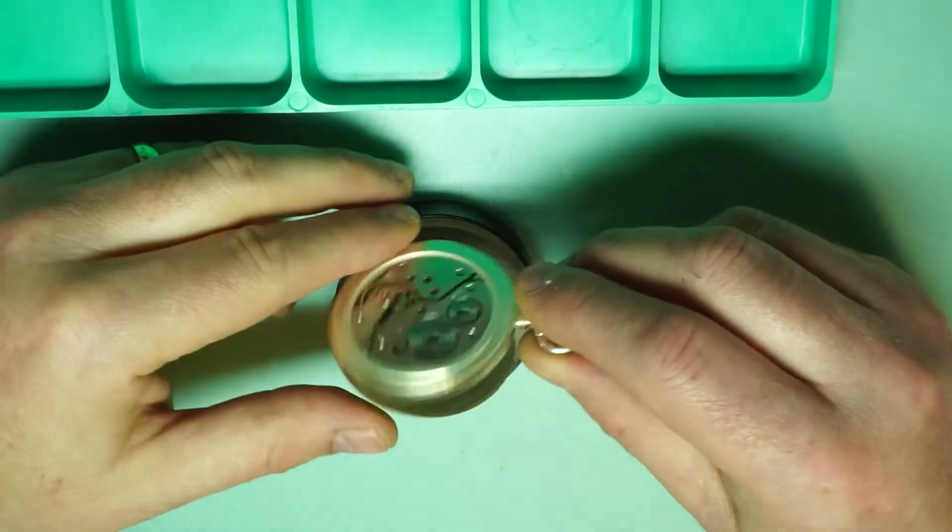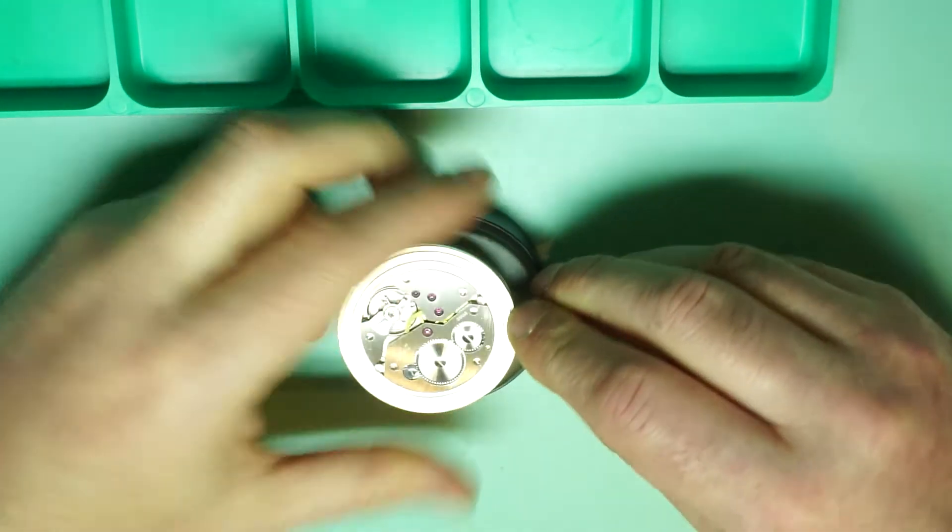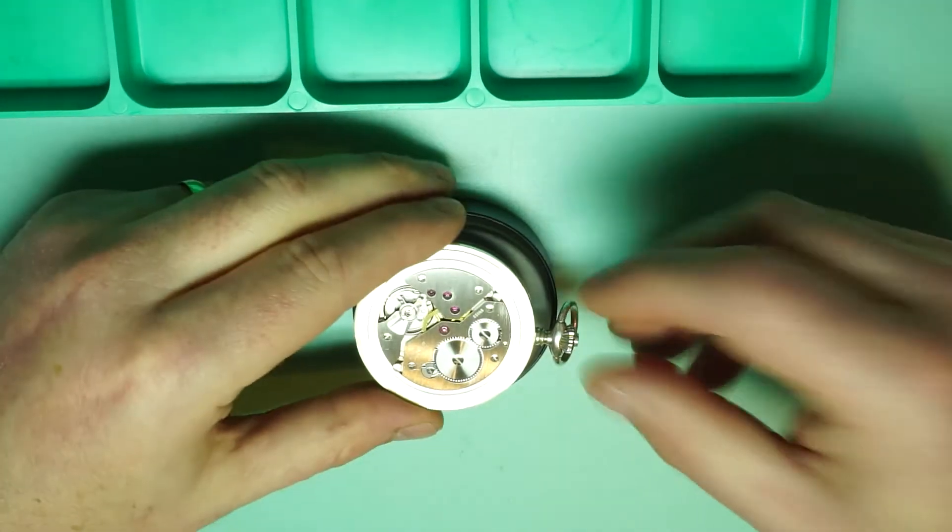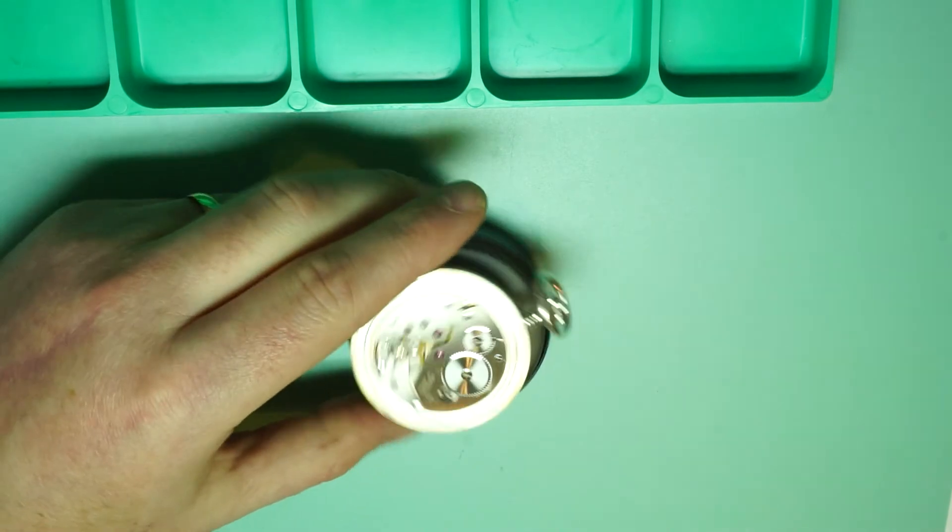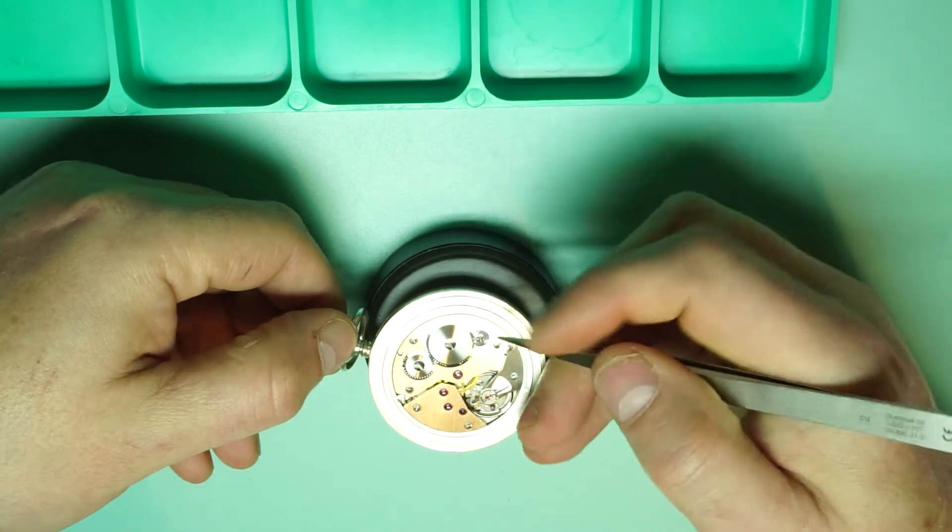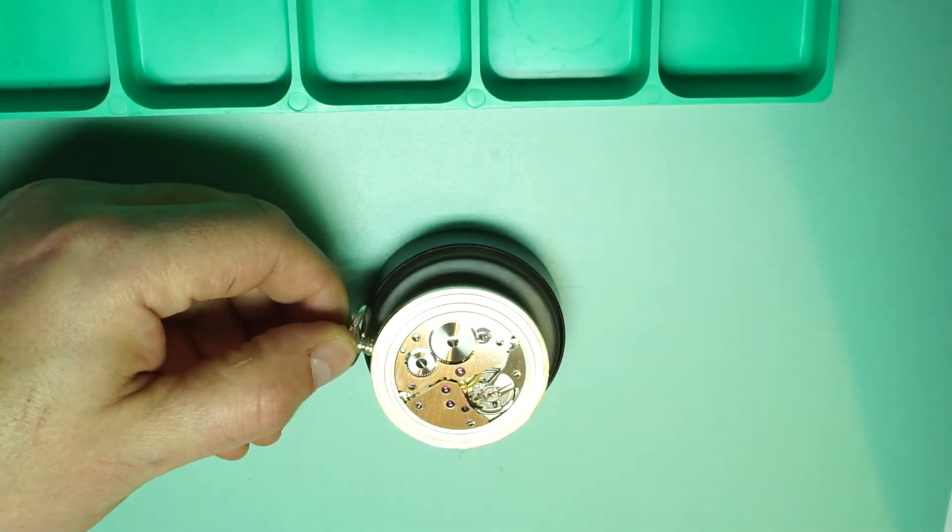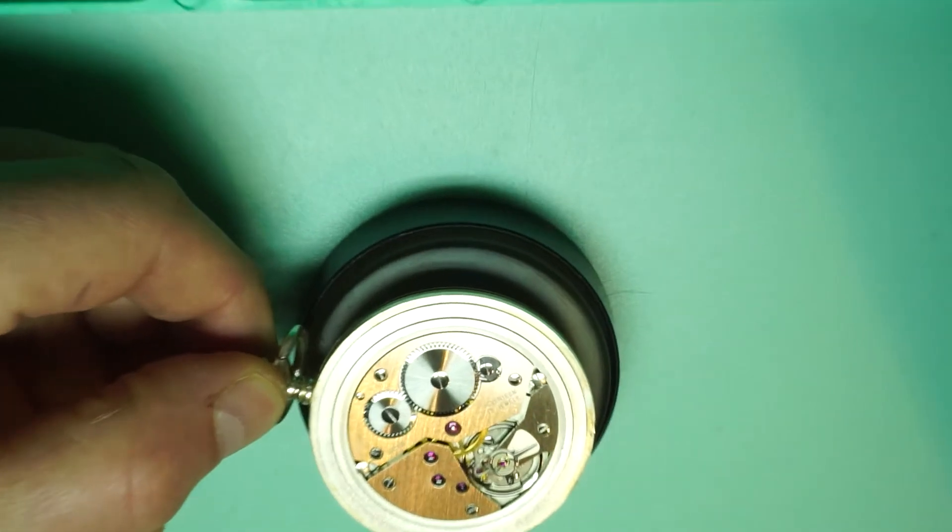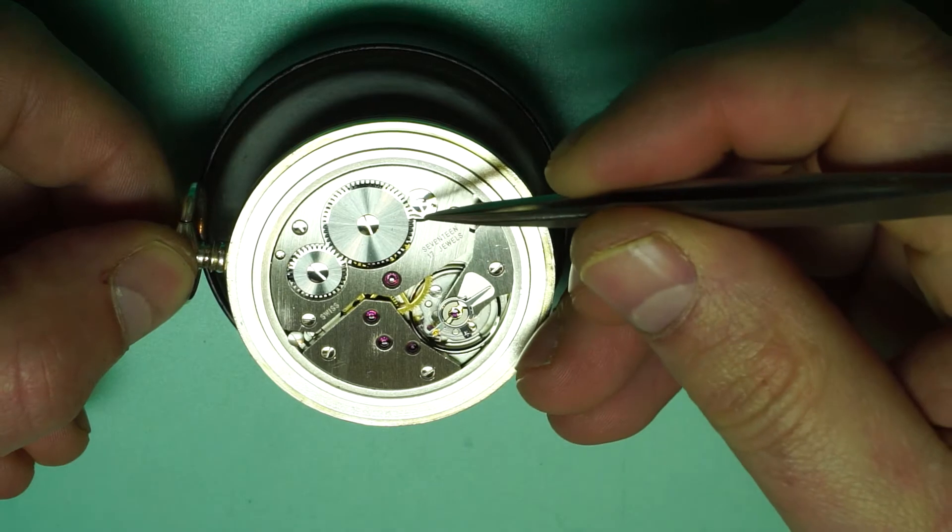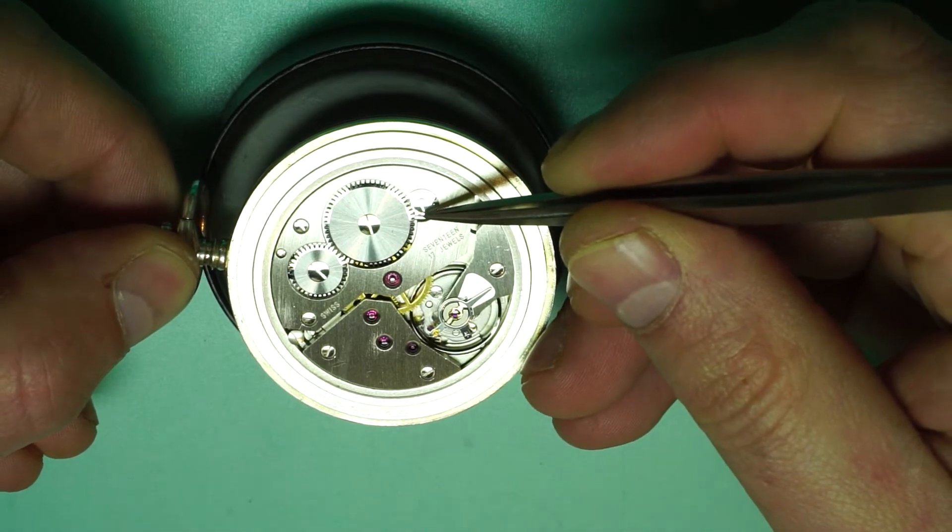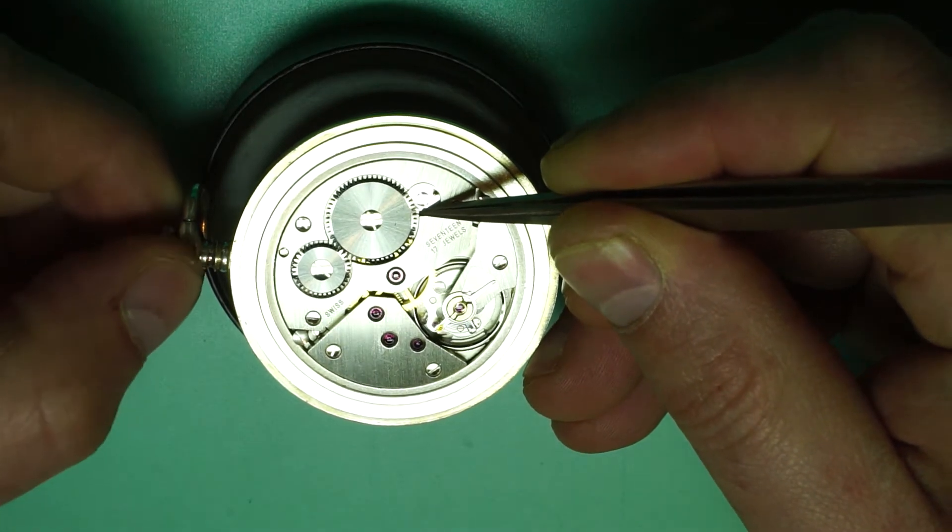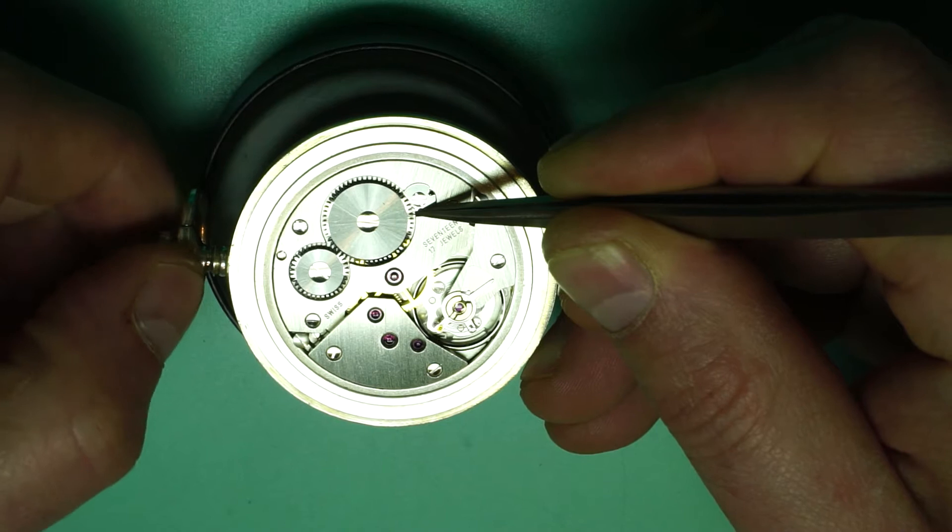So we've already taken the back cover off. So the next step is we want to power down the watch whilst the stem is still attached. You can do this once it's out of the case of course but it's easier to do it at this point. So you'll need a pair of tweezers and you'll want to put a little bit of wind on the stem. So we want to put a little wind on the stem just enough to move the click out of the way and as soon as it gets to that first point we can just move the click out the way and slowly let the mainspring down.